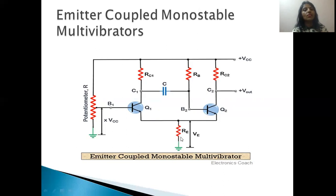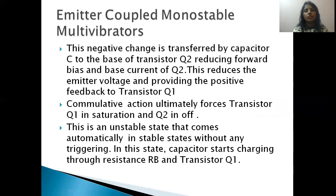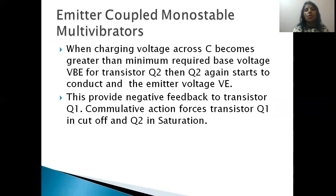The emitter voltage increases and it works as negative feedback. Due to this, Q1's conduction force starts to decrease and Q1 moves toward cut-off. Ultimately, Q1 reaches cut-off and Q2 leads to saturation. At this point, the capacitor is still in an unstable state. Finally, the unstable state goes into the stable state, and the stable state needs an external trigger to go back into the unstable state again.